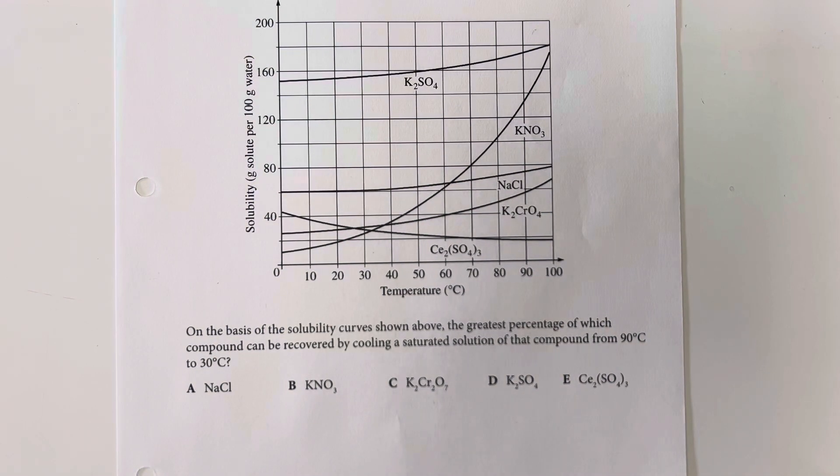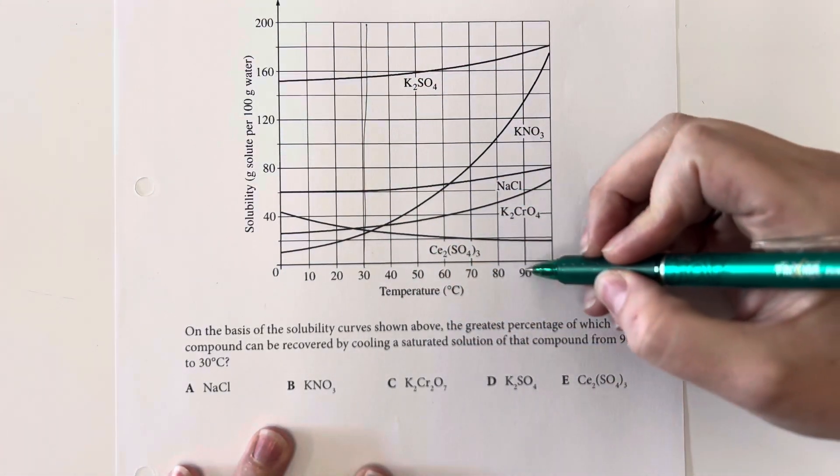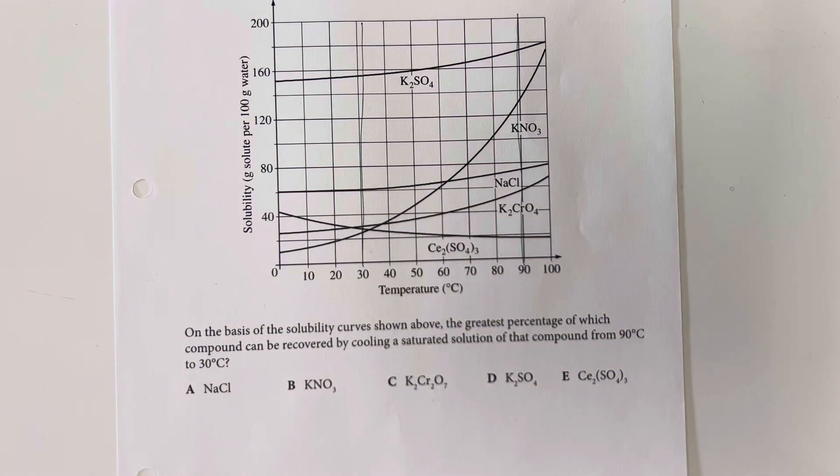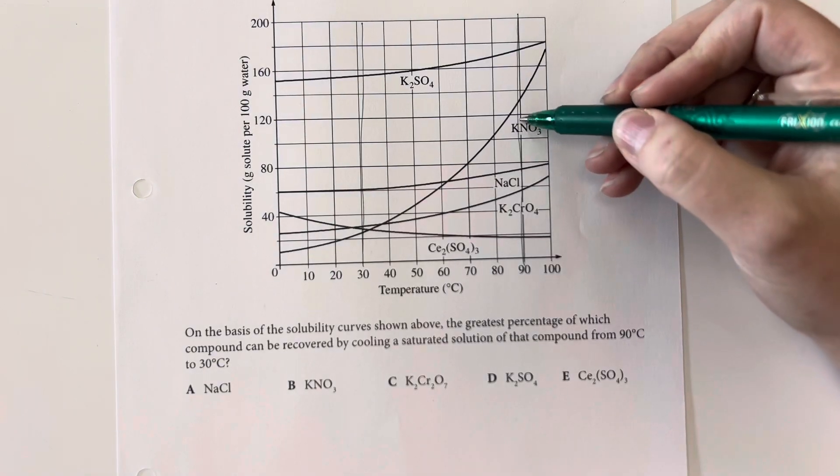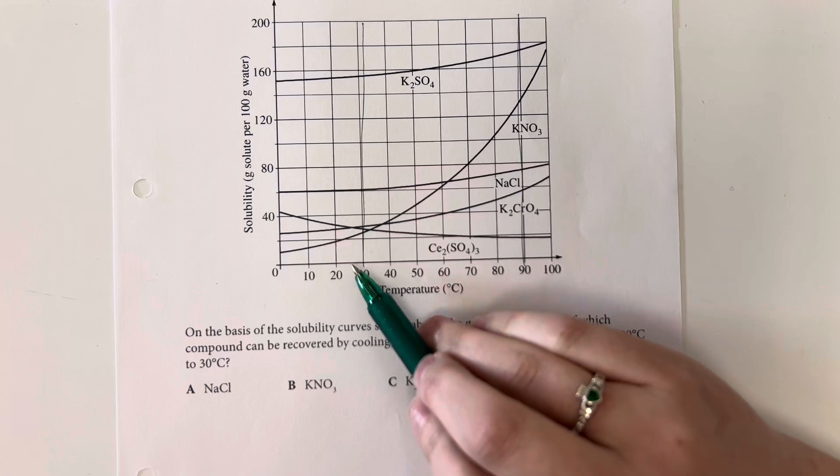On the basis of the solubility curves shown above, the greatest percentage of which compound can be recovered by cooling a saturated solution of that compound from 90 degrees to 30 degrees. So 30 degrees and 90 degrees. So we want the largest differential between how much could be dissolved at 90 degrees versus how much could be dissolved at 30 degrees.